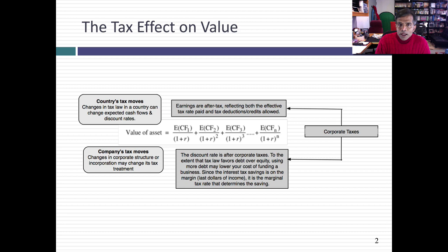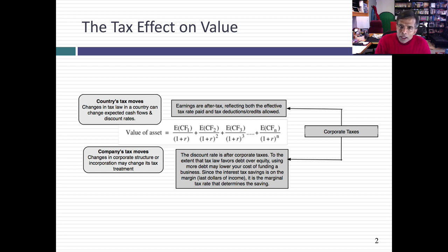Taxes also affect your discount rate, at least at a corporate level. If you're a business and you use equity to fund some of the business and debt to fund some of the business, in much of the world the tax code is tilted towards debt. Interest expenses on debt are usually tax deductible, but cash flows to equity are not. So you get a tax benefit from debt. If you borrow money at 8% and I allow you to claim a 25% tax benefit on interest expenses, effectively you're borrowing money at 6%. So the higher your tax rate, the lower your discount rate is going to be.